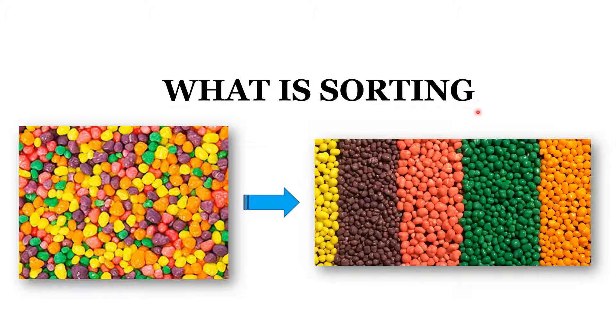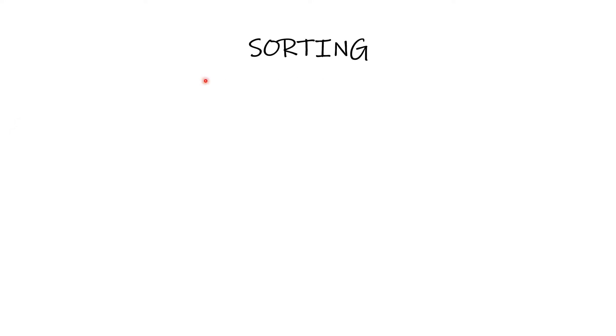In this video, we are going to see about sorting. Sorting is a process of arranging a group of objects in a particular order. We can sort the given objects by color, size, or alphabetical order. Sorting is not only the process of arranging elements from low to high but also from high to low.